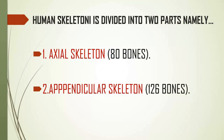Classification of the skeletal system — the human skeleton is divided into two parts. This is very important. Number one, the axial skeleton, which we call the midline skeleton, has 80 bones. Secondly, the appendicular skeleton has 126 bones.